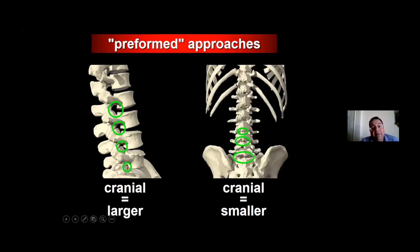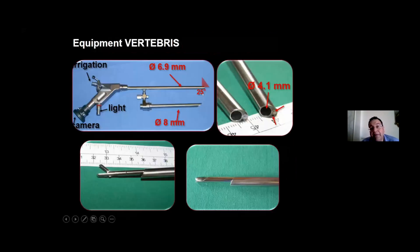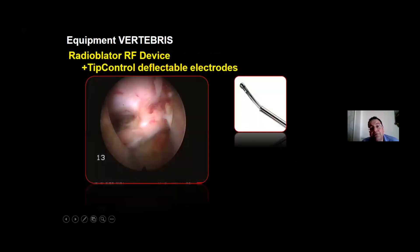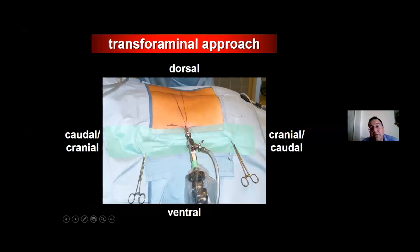This is how it looks like and this is how we should think about our approaches — whether to use the interlaminar approach or the transforaminal approach. We use this 25-degree endoscope with its channel and instruments. We also use the Trigger Flex device. This is how the transforaminal approach looks like, and I am fascinated with this approach.